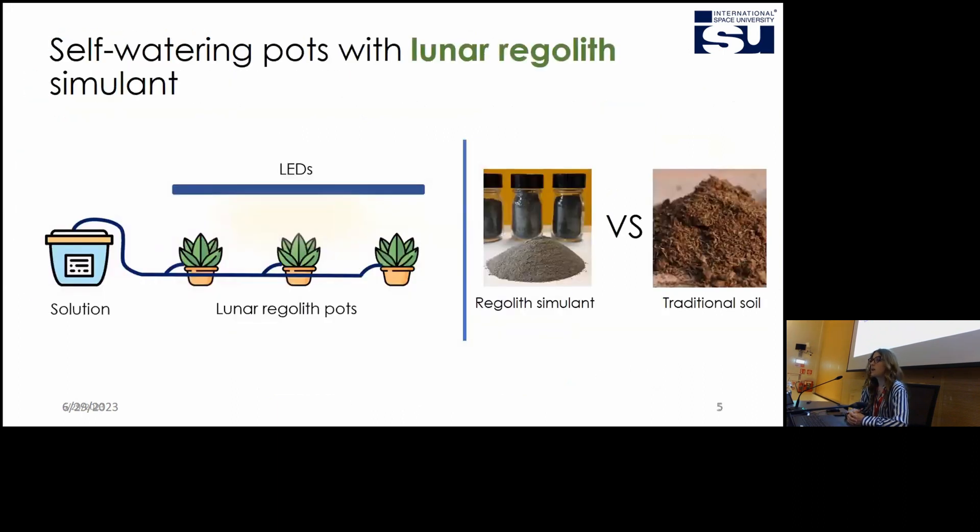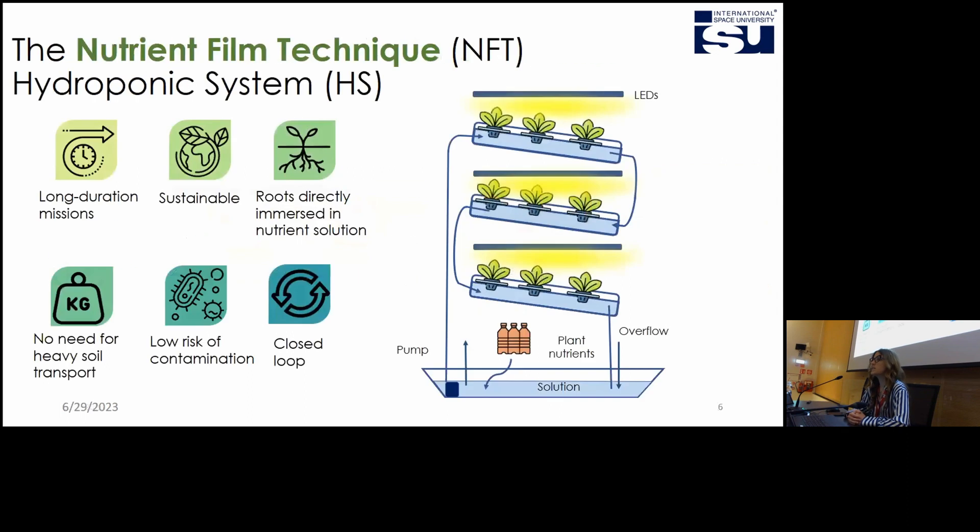The first system that I compared is the self-watering pot with lunar regolith. Basically these pots were connected to a solution with fertilizer and as a reference I used the same system but with traditional soil. These systems were compared with nutrient field technique hydroponic system that is particularly suitable for long duration missions and is a closed loop that guarantees low risk of contamination of both the human habitat environment and the lunar environment itself.